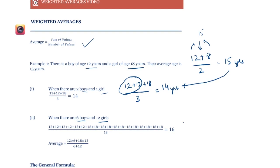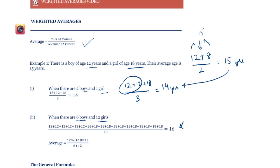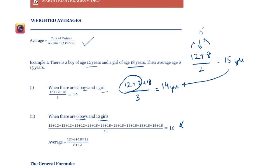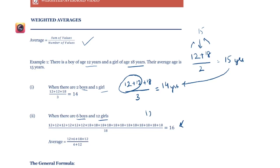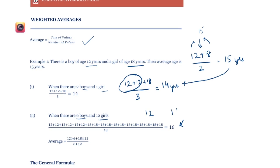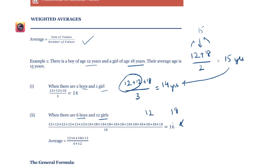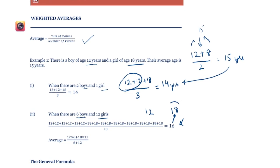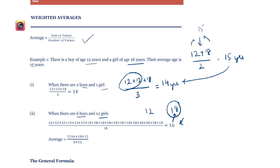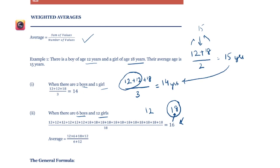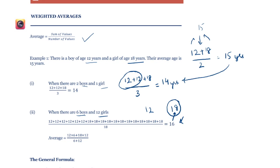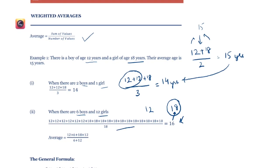The average in this case would be 16. This 16 is closer to the age of the girls. The age of the boys was 12 and the girls was 18. The 16 is closer to the age of the girls because there are more girls, so the weight given to the girls is more.